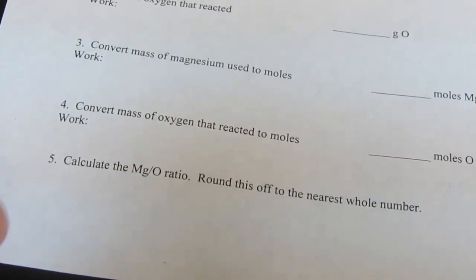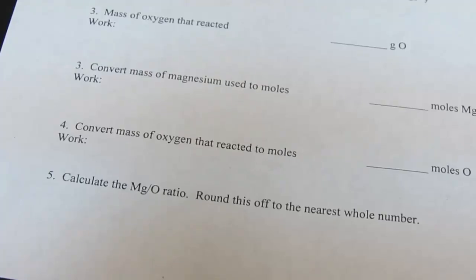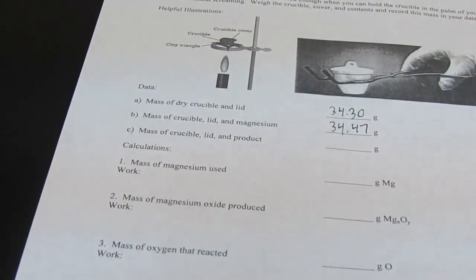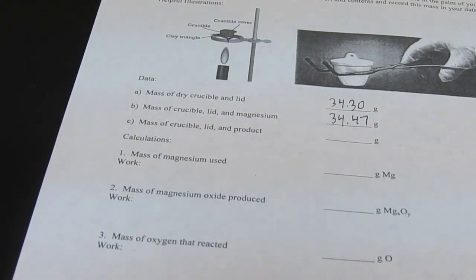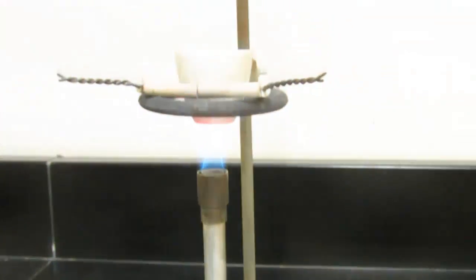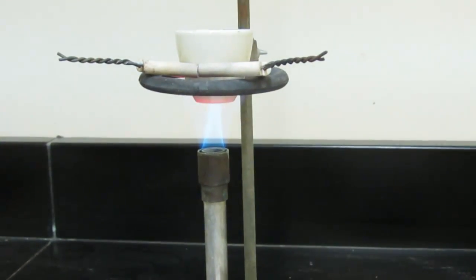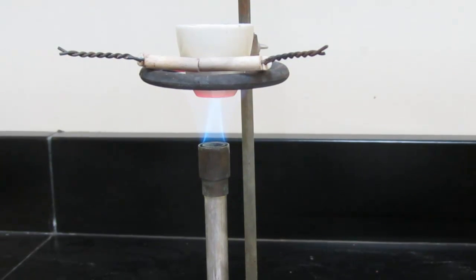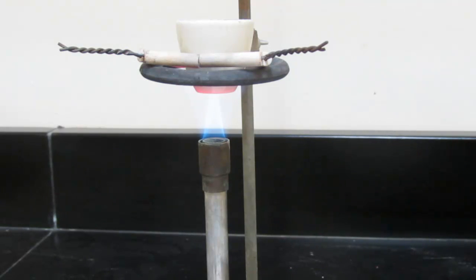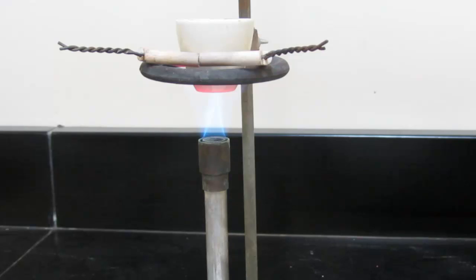Okay, and then at the very end, we'll find the empirical formula of our magnesium oxygen compound. Alright, I think that gives you a pretty good idea as to what you're going to be doing in the lab. Hopefully you'll come prepared, and you'll have watched this and you'll be ready to go by the next class period. So thanks for watching and we'll see you in class. Bye-bye.